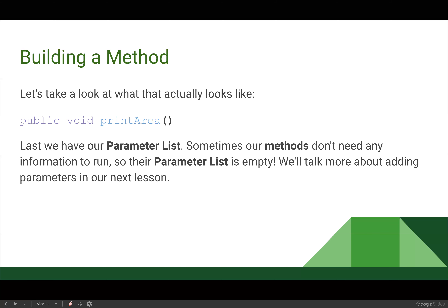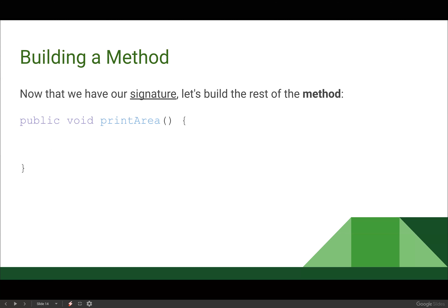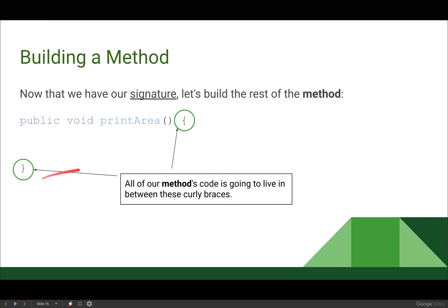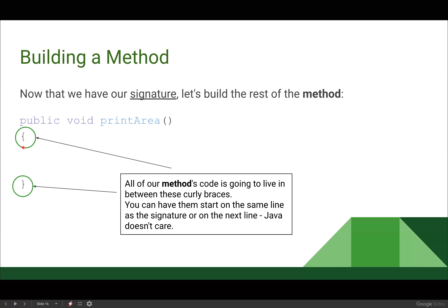Once we have built our method signature, we're going to build the rest of the method. We add curly braces, and all of the code for our method is going to live between those curly braces. The opening curly brace can live either on the same line as the signature or on the next line — Java doesn't care where it is as long as it's after your signature. My personal preference is to have the opening curly brace on the same line.